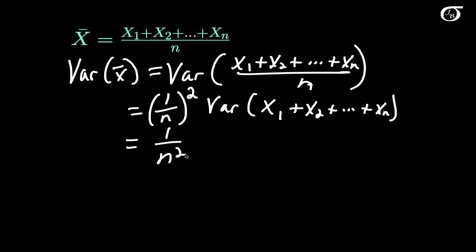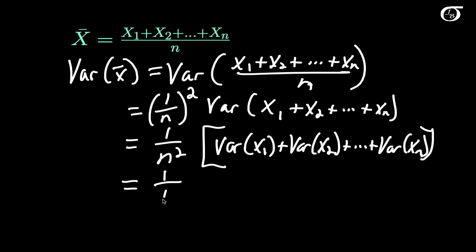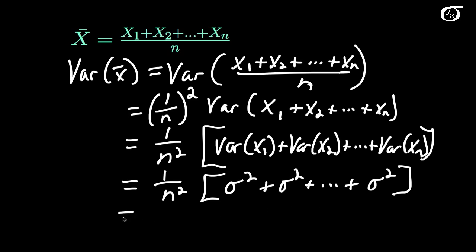This equals 1 over n squared times the variance of the sum. The variance of the sum is the sum of the variances if the terms are independent — and x1 through xn are assumed to be independent. So this is 1 over n squared times (variance of x1 + variance of x2 + ... + variance of xn). Each of these terms is drawn from a distribution with variance sigma squared. So we have 1 over n squared times (sigma squared + sigma squared + ... + sigma squared), with n of those, giving 1 over n squared times n·sigma squared, which equals sigma squared over n.